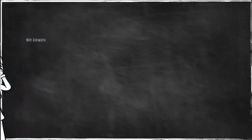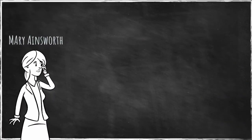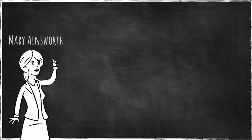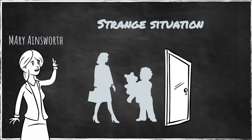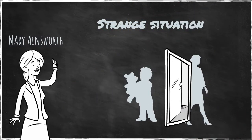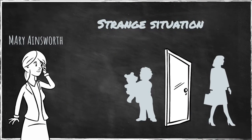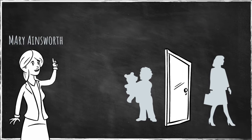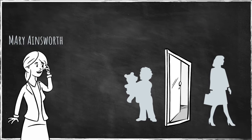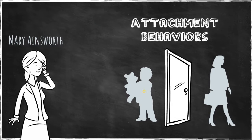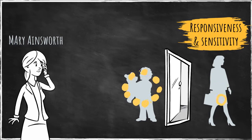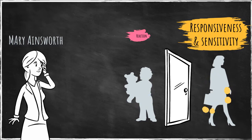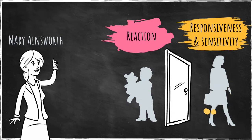Mary Ainsworth applied Bowlby's attachment theory to an experimental procedure called the strange situation, which involved mothers briefly leaving the observation room where their infants were playing. This procedure was designed to elicit attachment behaviors, which could be observed through maternal responsiveness and sensitivity and infant reaction to separation.